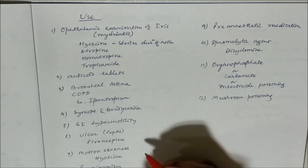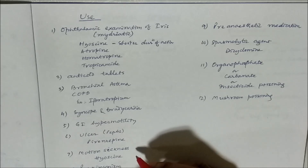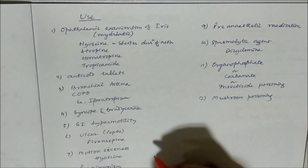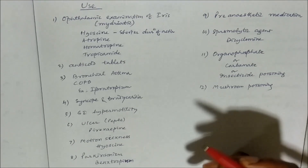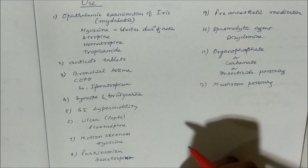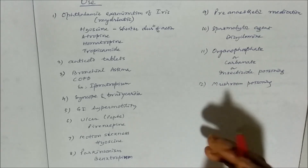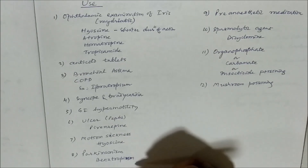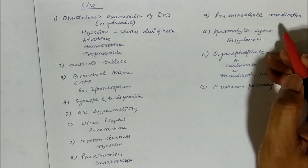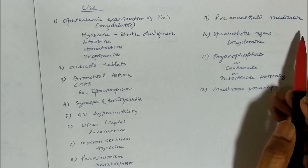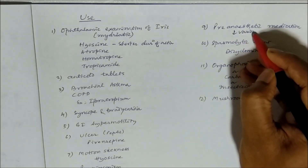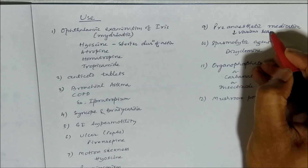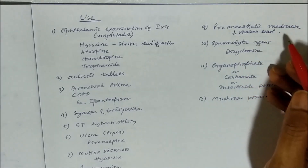Scopolamine has a role in motion sickness also, so vomiting during traveling — the drug of choice can be hyoscine. Then for Parkinson's symptoms, the cholinergic action can be blocked by use of benztropine. We can use these drugs as pre-anaesthetic medications to decrease various secretions, and also they can cause urinary retention and constipation.